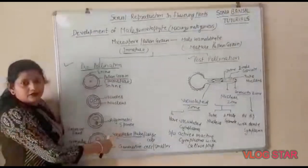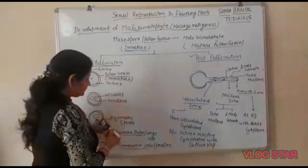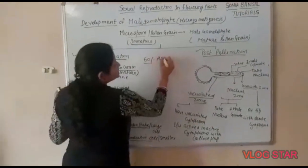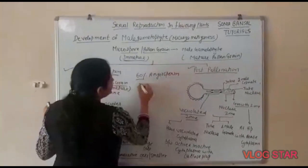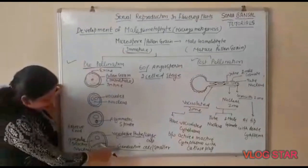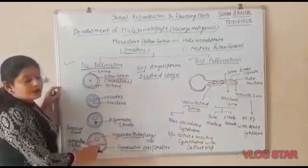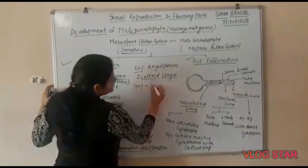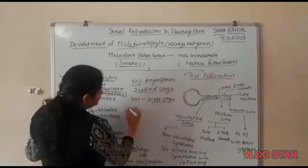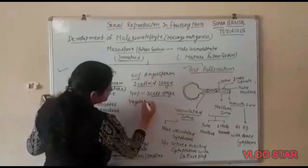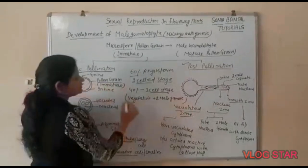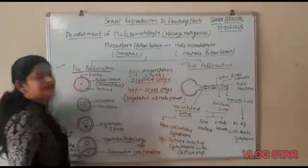Mostly, pollen grains are shed at the two-cell stage. In 60% of angiosperms, pollen grains are released at the two-cell stage, meaning one generative cell and one vegetative cell. In 40% of cases, pollen grains are released at the three-cell stage, meaning one vegetative cell plus two male gametes.